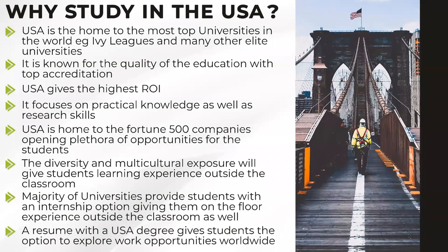One very good part of the USA education system is you always have an option to choose what kind of program you wish to study, what subjects you want to combine, and how you want your study experience to be. You can choose an MS program with a theory and research option, or go for a coursework-based option. You can go for theory-based masters, course-based masters, or club them together. Most students who wish to do a PhD after masters go for research-based education.